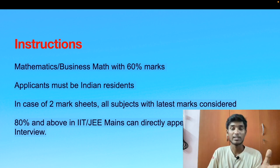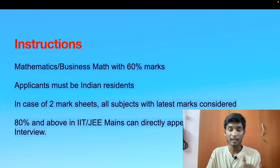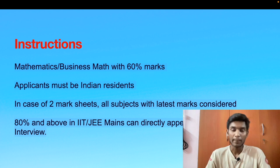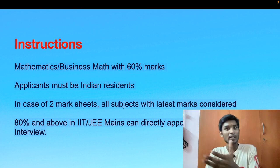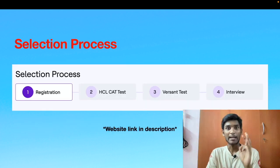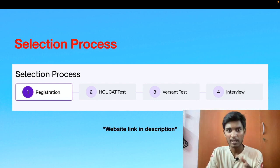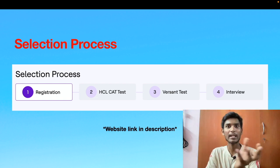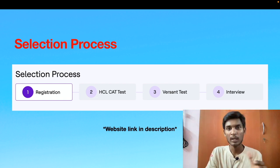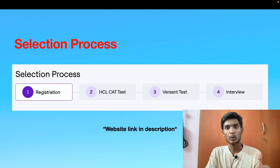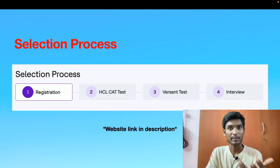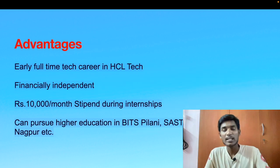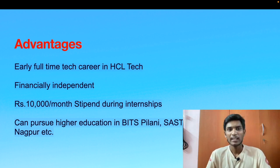The fourth point is that if you have secured 80% and above in JEE Mains or IIT JEE, you can directly appear for the Versant test. So of the four selection steps, you can skip the first two and go directly to the Versant test, and after completing it you go straight to the interview. That is the advantage if you apply for this program after clearing JEE Mains.